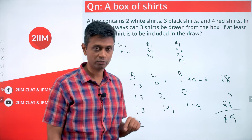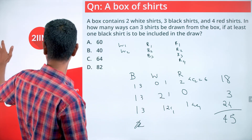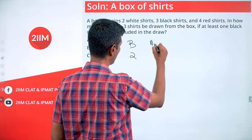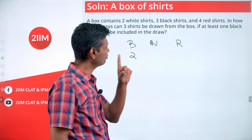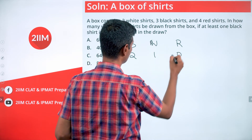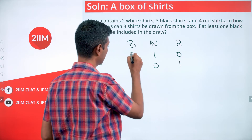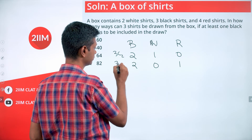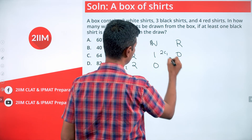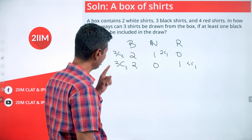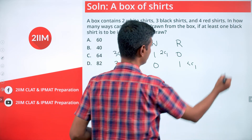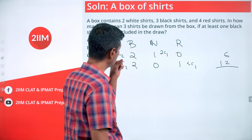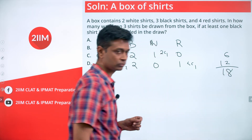One black shirt gives 45 ways. Now let's move on to two black shirts. With two black shirts selected, we have only one more shirt to pick — it could be one white and zero red, or zero white and one red. Number of ways of selecting two black shirts from three is 3C2 = 3. So 3 × 2C1 = 3 × 2 = 6 ways, and 3C2 × 4C1 = 3 × 4 = 12 ways. Total for two black shirts: 6 + 12 = 18 ways.